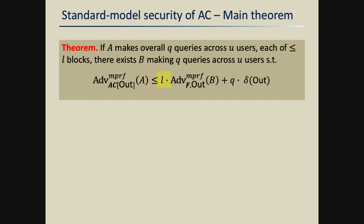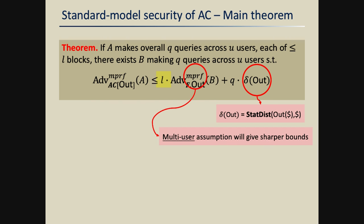Another important point is that you can't really get a PRF for any possible out — the properties of the function out matter. If out is a constant function, it can't be a pseudorandom function. There is an additional term delta-out which measures how well out preserves a random input and produces a random output. Conceptually, we are reducing to a multi-user security assumption, which is very worthwhile. We could apply the hybrid argument and reduce to a single-user assumption, but reducing to multi-user security gives much better bounds. Also note that the bound doesn't depend explicitly on the number of users.